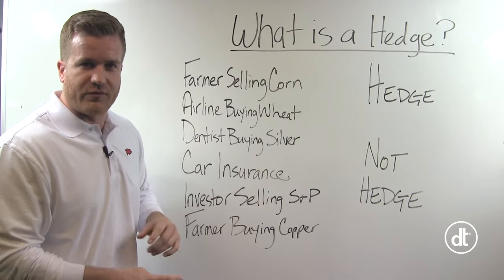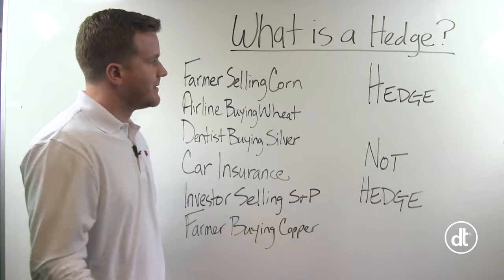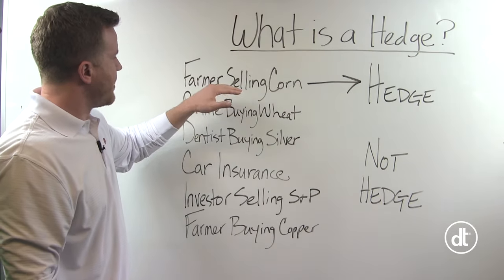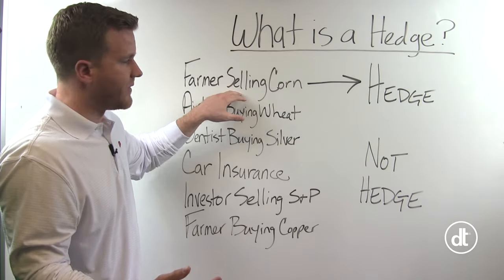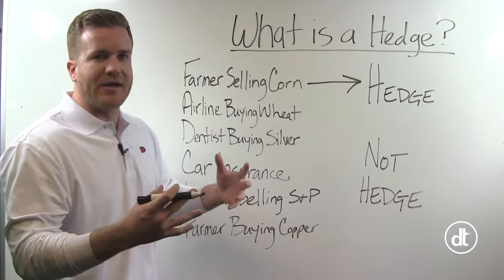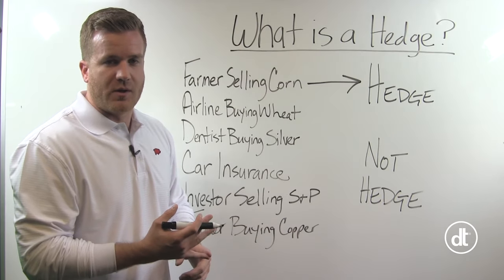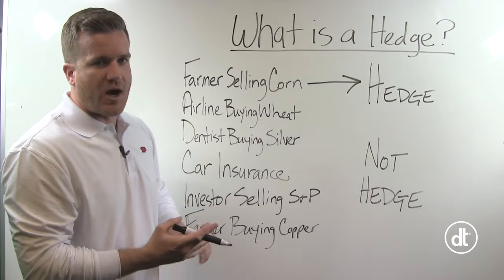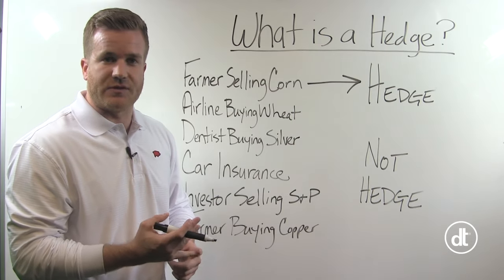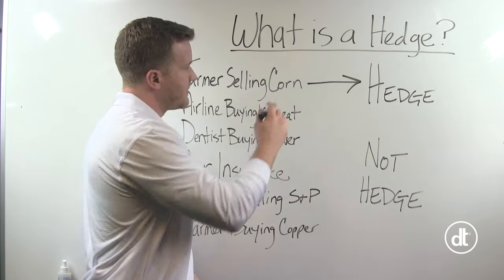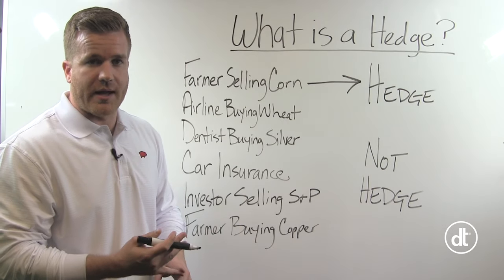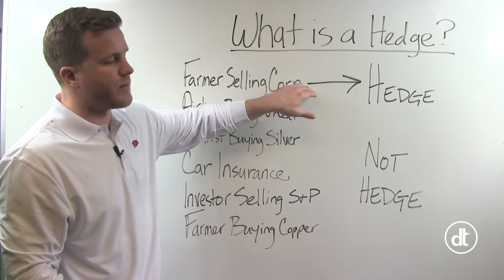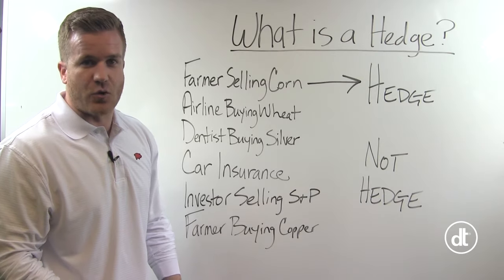A farmer selling corn futures — would that be a hedge or not a hedge? That would be a hedge. We're protecting against an adverse price movement. A farmer is intrinsically long the corn market; if he's growing corn or has some in the bin, he makes more money when the price goes up. An adverse price movement would be corn prices falling. Selling corn futures means he'd be making money in his futures account to offset losses in the physical commodity he's holding. It's protecting him from an adverse price movement — that's essentially what a hedge is.